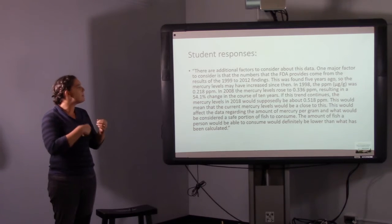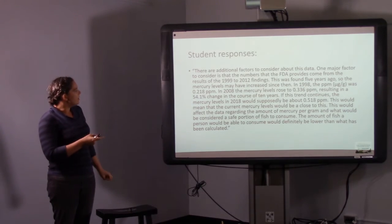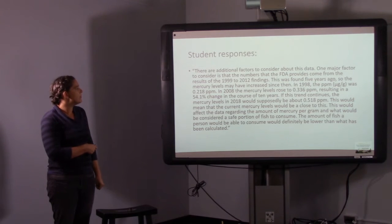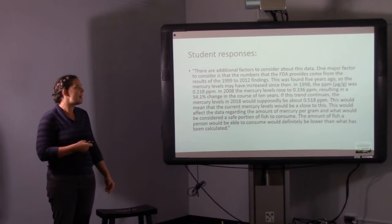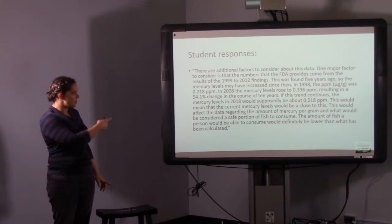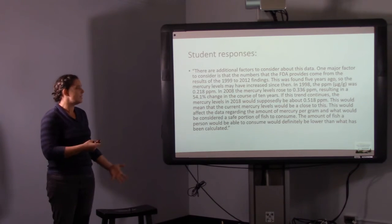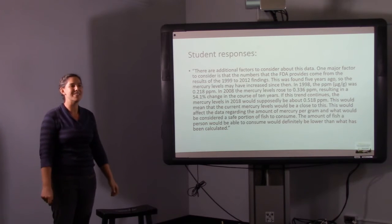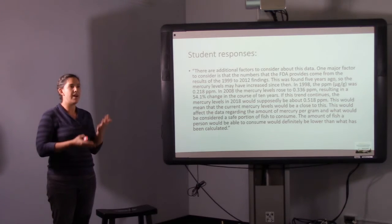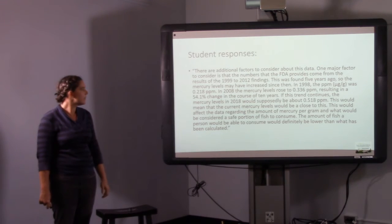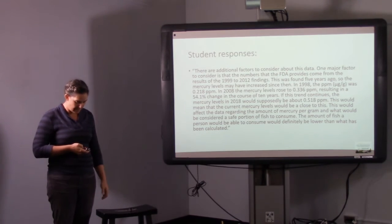And here's someone who picked up on the increase. It was increasing at 51% change. And so by 2018, we would be up to 0.5 parts per million. And then she also very nicely says, this means that you can then consume less ahi if the mercury levels are rising. So she's able to identify that relation. So those were some examples.